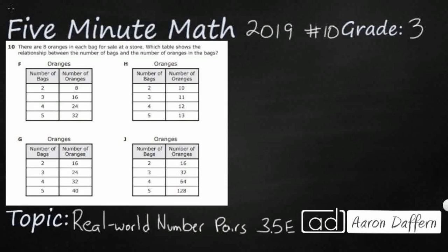Hello and welcome to 5-Minute Math. Today we are looking at the third grade concept of real world number pairs. This is standard 3.5e in the great state of Texas and we are looking at item number 10 of the 2019 released STAR test.